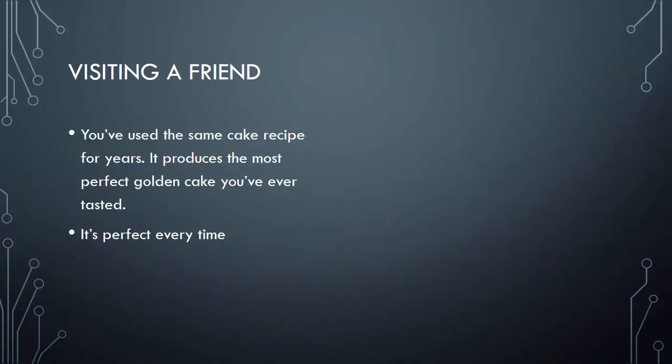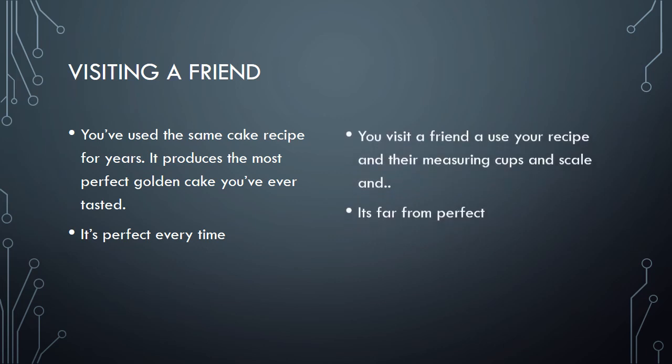You've got the same cake recipe you've used for years. It comes out perfect every time. You've got it down just absolutely to the point where it's right, it's spot on, it's wonderful. You go over to a friend's house and you try to use your same recipe - comes out perfect every time when you make it - and you use their measuring cups and you use their scale. You bake up this cake and it comes out not quite perfect. How could this possibly happen? Why? What is happening here?